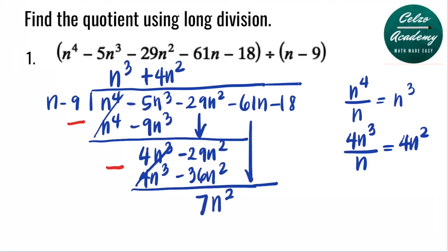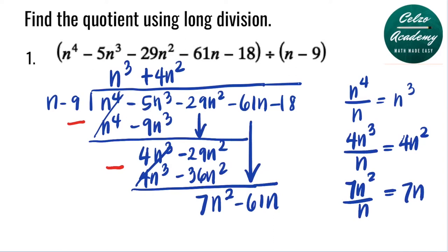Bring down the next term, negative 61n, and repeat the process. We divide 7n squared by n, which gives 7n. So the third term of the answer is 7n. Now we multiply 7n by the divisor n minus 9: 7n times n is 7n squared, and 7n times negative 9 is negative 63n.